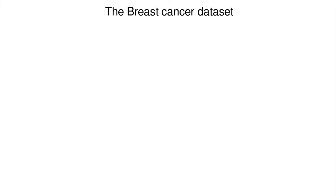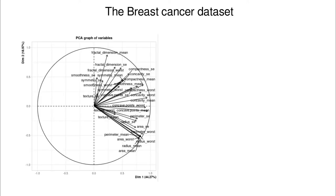Let's talk about varimax rotation. One of the problems with PCA is that sometimes, if you don't know the problem very well — imagine that you are in charge of some dataset and you are not an expert in the variables there. So you have something like this — the breast cancer dataset. You have a lot of variables that are correlated with dimension one, and some of them are correlated with dimension two, but you cannot tell what's the meaning of those variables because you almost have a continuum of representation, a continuum of quality of representation in each of those variables.